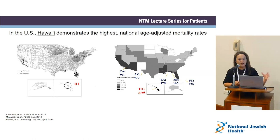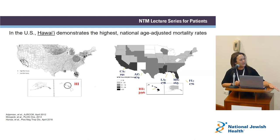Just in the U.S. alone, we know there's a geography to NTM infections. There are hot spots where NTM infections are reported: California, Arizona, Louisiana, Texas, et cetera. So there's a geography to these infections. Why? Could it be that geography matters?